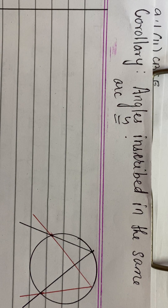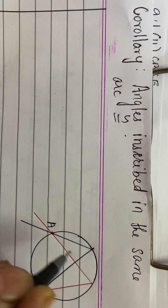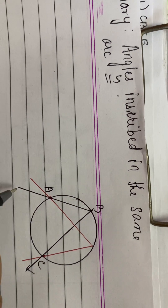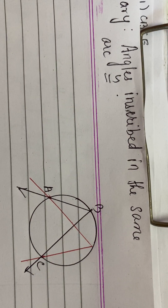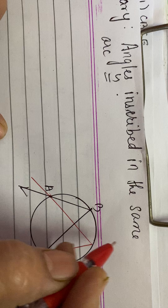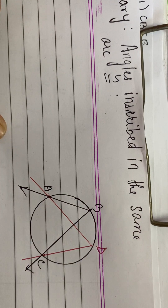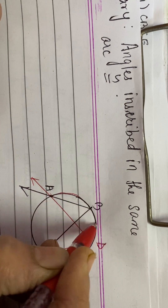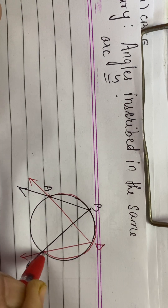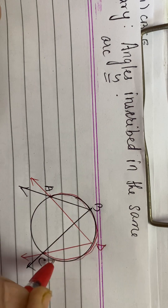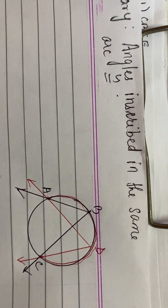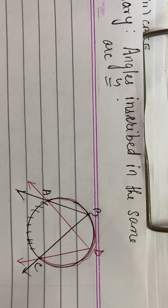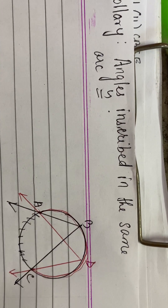Here we have an angle A, B, C and we have another angle A, D, C. Both the angles are inscribed in the same arc A, B, C. They are inscribed in the same arc and they are intercepting arc A, C. So what do we have to prove? That these two angles are congruent.